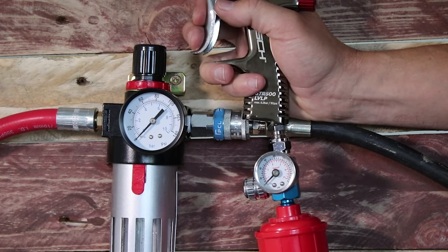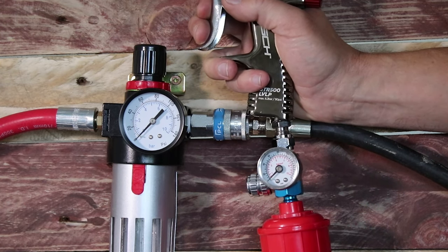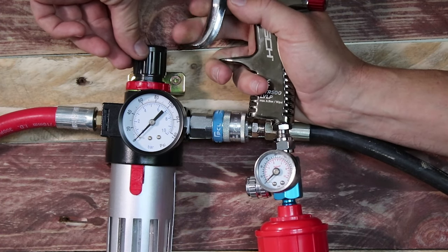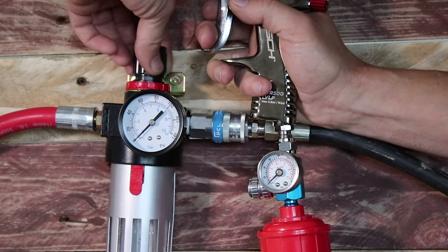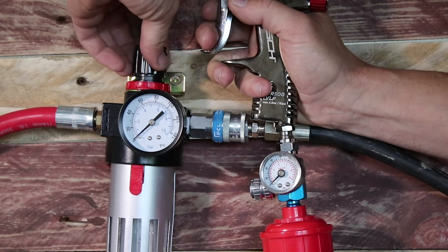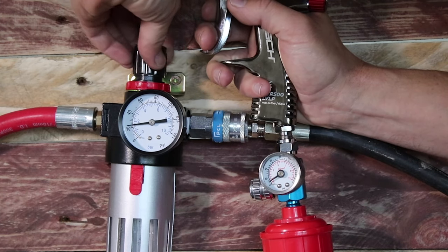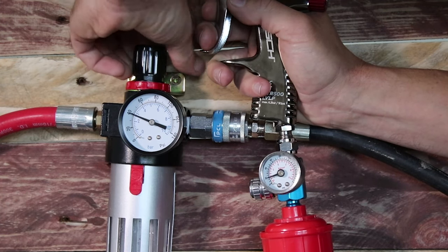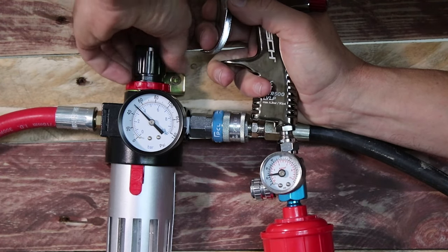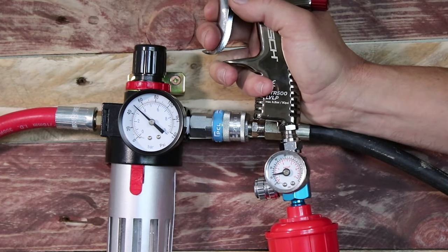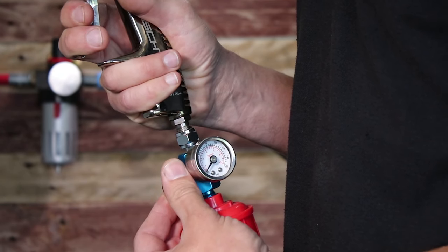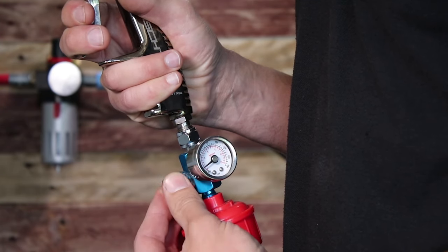Now you'll press the trigger gently on the spray gun until you start to feel resistance. This is the first stage of the trigger function, only allowing air through the air cap. Keep the trigger depressed like this while simultaneously adjusting the air supply regulator. On this regulator we need to keep turning the adjuster clockwise to increase the working pressure. Now keep an eye on the gauge on the mini regulator fitted to the spray gun and keep adjusting your supply pressure until the gauge on the gun shows 2 bar or 29 psi.